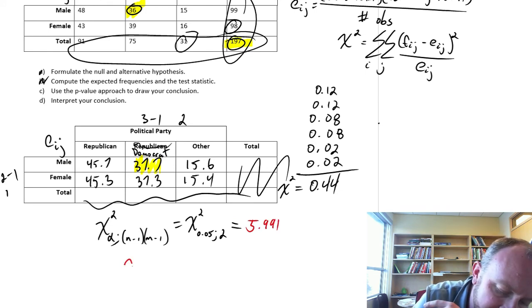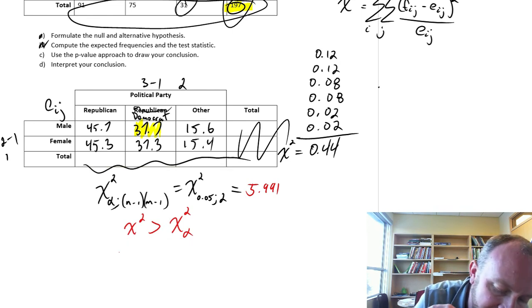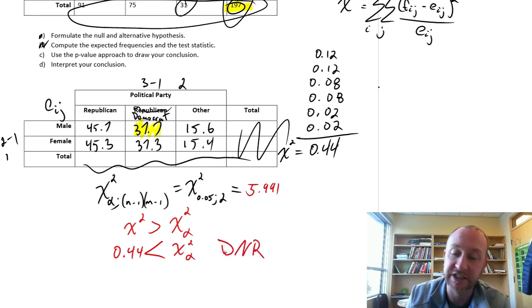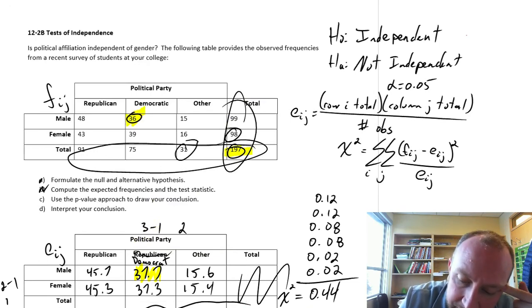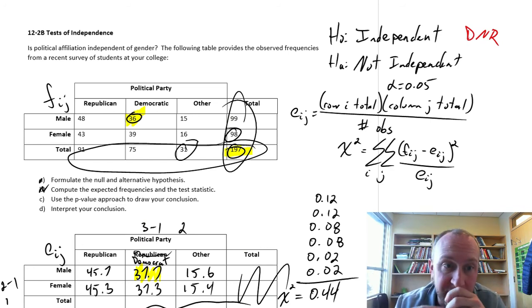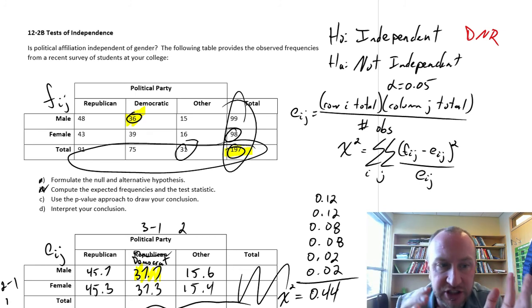Our rejection rule is we reject if our test statistic is larger than that critical value. Here we have a test statistic that is certainly smaller than our critical value, so we do not reject. Based on the critical value approach, we do not reject. It appears as though these two variables are independent. The political party that an individual votes for is independent of their gender.